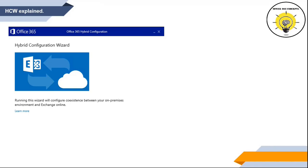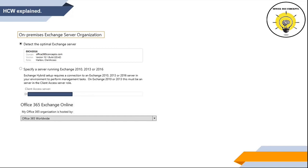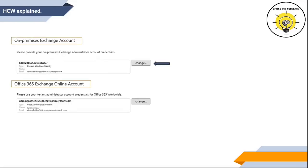On the next screen, Hybrid Configuration Wizard will either automatically search for the right Exchange server, or you can manually specify the Exchange Server name. If you are using Exchange Server 2010 or 2013, this must point to the Exchange Server that has the client access server role installed. On the section where it says 'my Office 365 organization is hosted by', select Office 365 worldwide. On the next screen, you will be asked to enter your on-premise admin credentials and administrator credentials for your Office 365 tenant.